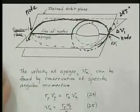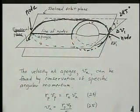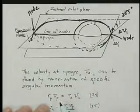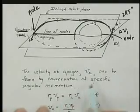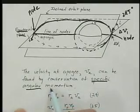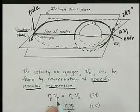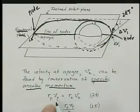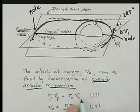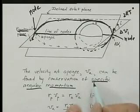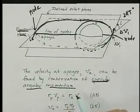Now, let's calculate what is our speed at apogee. We can get that from the conservation of specific angular momentum. RP VP, that's the radius times the velocity at perigee, equals the radius at apogee times the velocity at apogee.